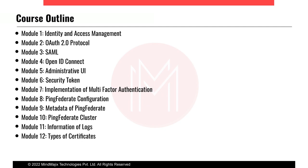We'll cover the prerequisites in class itself. For example, to install PingFederate, you need Java — PingFederate is a Java-based module. I'll explain how to install Java and set up Java paths on your machine. I'll also explain how to get the PingFederate software and license, so candidates can install it on their own machines and get a 30-day license to work with it.